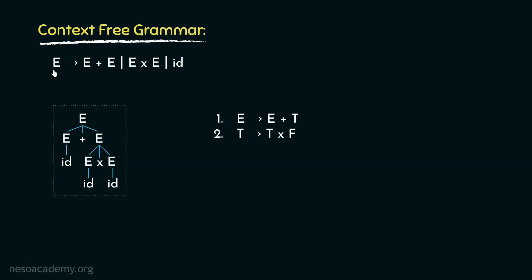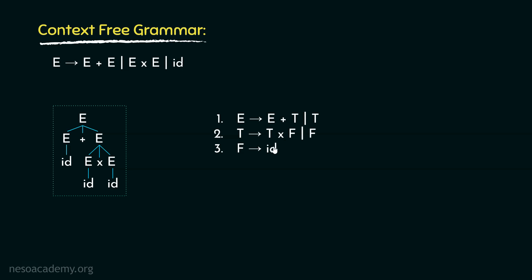This means from e we should have the ability to directly derive the multiplication operator. So, we should add a new rule: e can be rewritten as t. And now, from this t, we can derive t into f. Let's include another rule — the third one — f can be rewritten as id. Now, so that we can derive id from the start symbol e, we will have to add another rule: t can be rewritten as f.